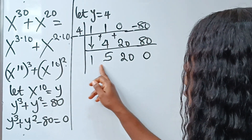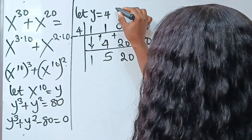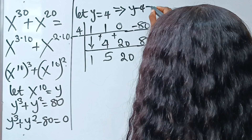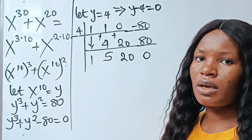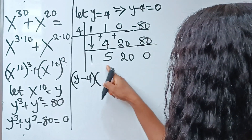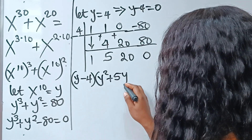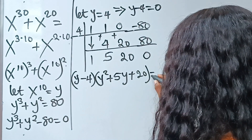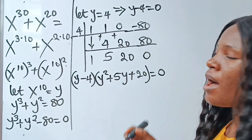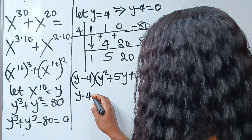Next, we form our quadratic equation using the remaining coefficients. Since y equals 4, that means y minus 4 equals 0. So we can write (y minus 4) multiplied by the quadratic formed from the remaining coefficients: y squared plus 5y plus 20, all equal to zero.